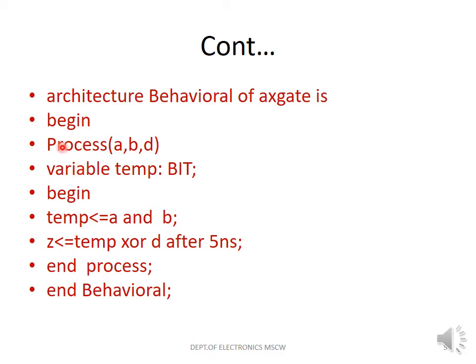The declarative part is written after the process keyword and before the begin. There, we declare one variable named temp, and it is of the type bit. This temp variable will be used after the begin and before the end of the process. Let us write: temp := A AND B.